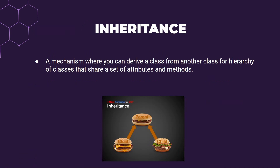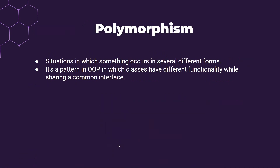That's the concept of inheritance. Next is polymorphism. Polymorphism means different forms — 'poly' means multiple and 'morphism' means form — so polymorphism describes situations in which something occurs in several different forms.